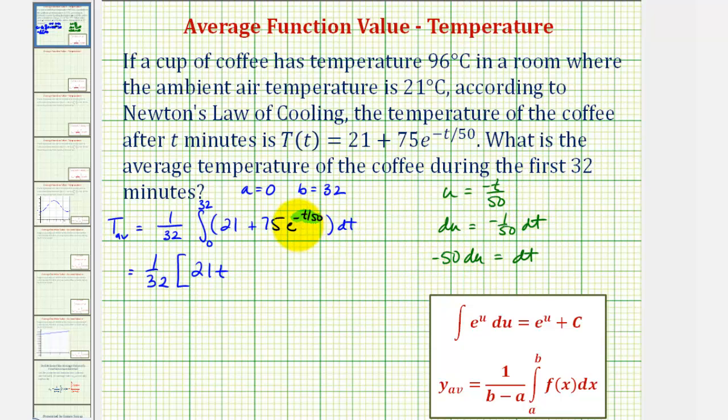So when we integrate this, we'll have an extra factor of negative 50. So we'll have plus 75 and then times negative 50 times e to the U or e to the negative t divided by 50. Let's go ahead and simplify this here. 75 times negative 50 is negative 3,750. So we can write this as 1 over 32. Then we have 21t minus 3,750 times e raised to the power of negative t divided by 50.